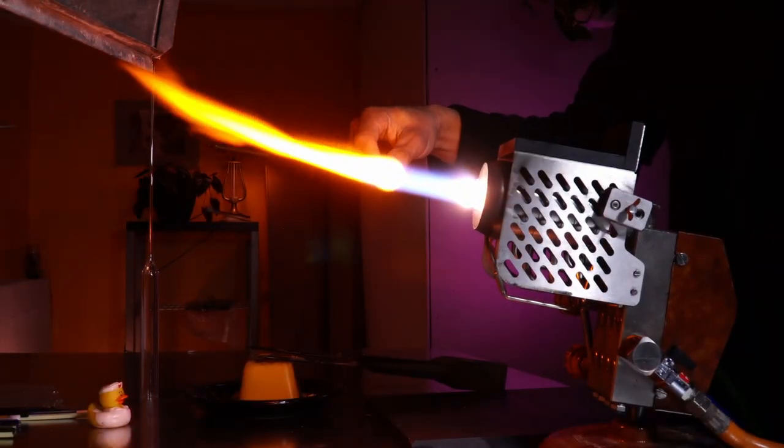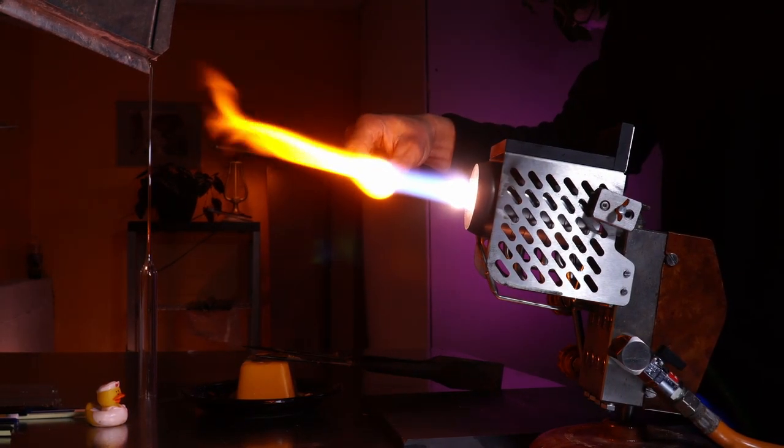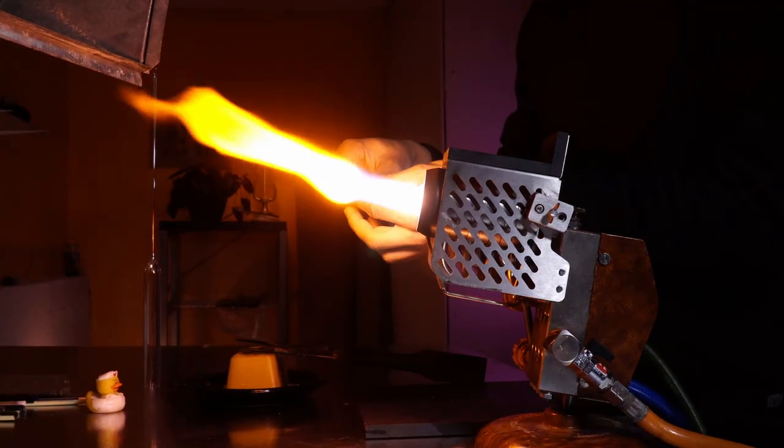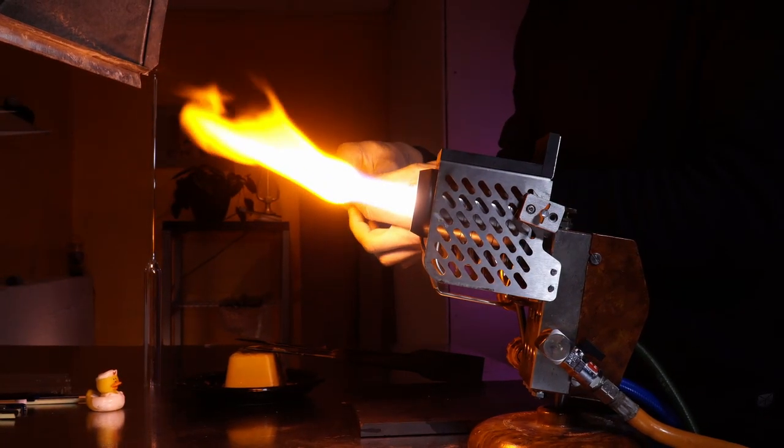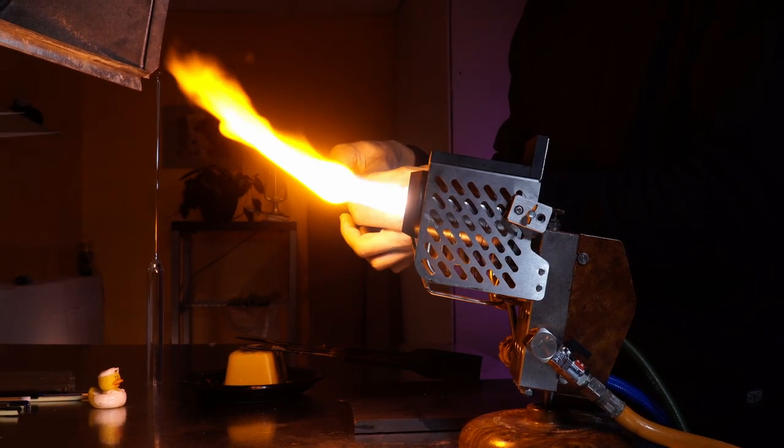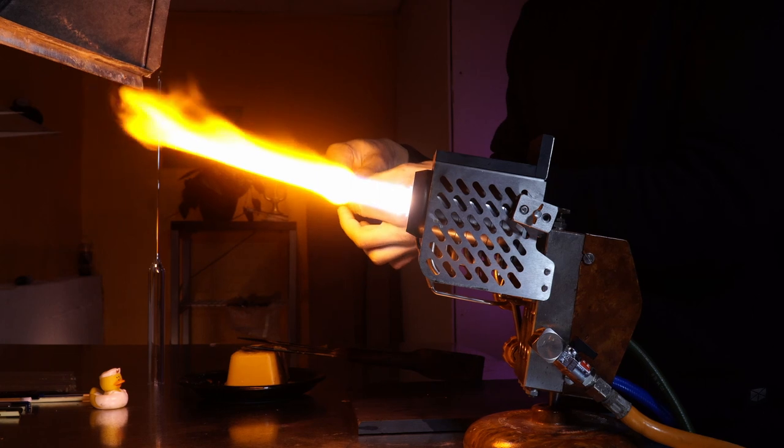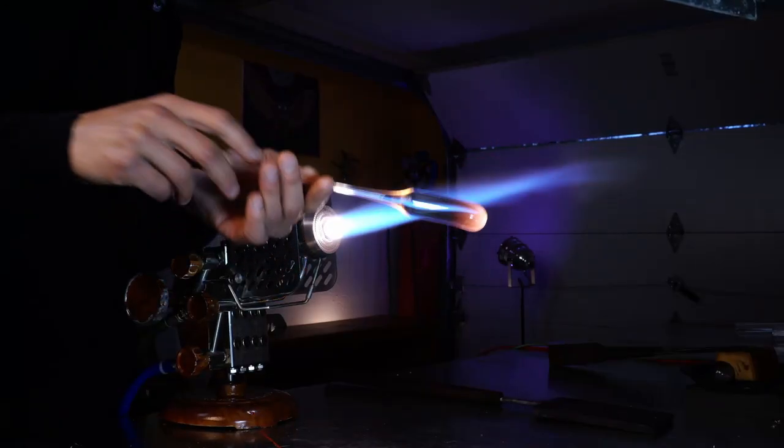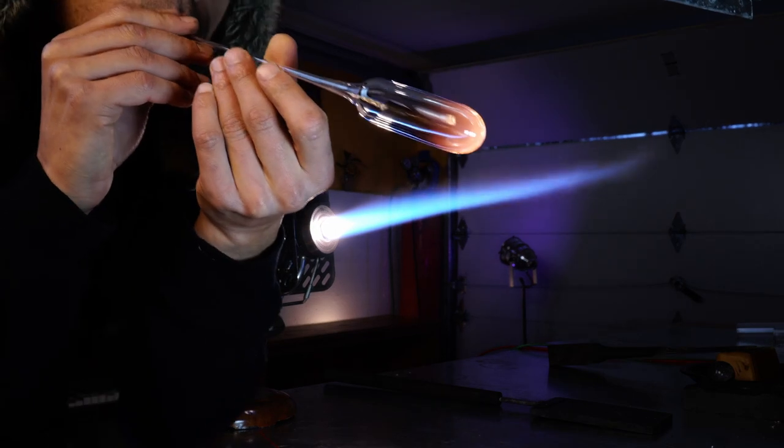All right, now we'll just warm up the end of this tubing. Get it nice and even. And our goal here will be to have a gradual heat going down the wall weight towards the handle. This will enable us to get a nice thin bubble on the tip, while not having the side walls too thin towards the back. Here we go.